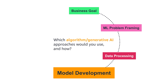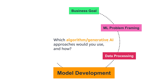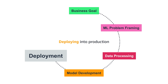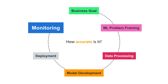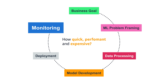Then comes model development itself — which approaches and algorithms to use, or whether you'd use generative AI, and if so, which foundation models and how to use them. Moving on to deployment: taking what you've built from experiments and deploying it into production so it can be used by everybody. Then monitoring — capturing how accurate it is, how well it's being used, how performant, and how expensive.